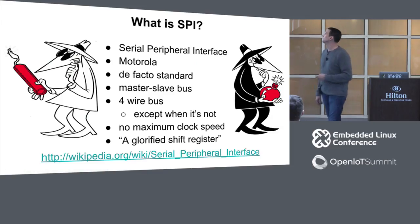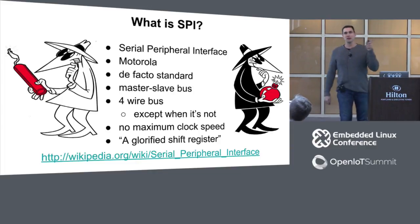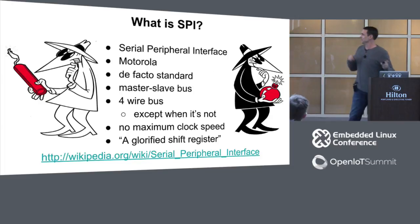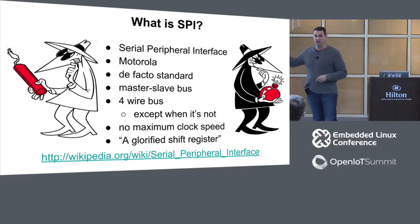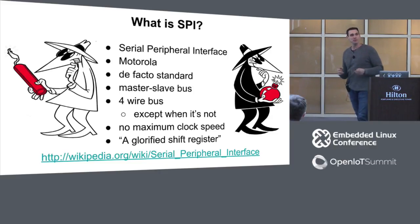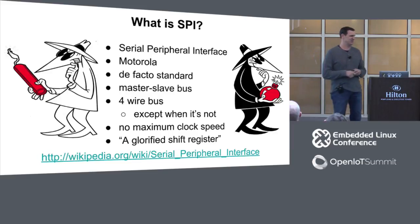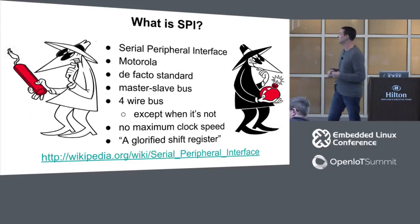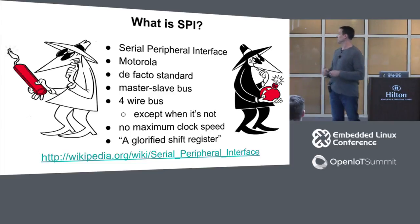So what is SPI? Serial Peripheral Interface — not as many people in Europe get this reference, but more people in the US will. It's a Motorola de facto standard going back to the HC08 microcontroller timeframe. For any of you who started in university working on HC05s or HC08s, you might have seen this stuff back then.